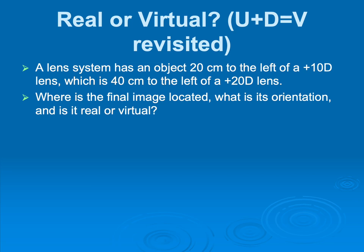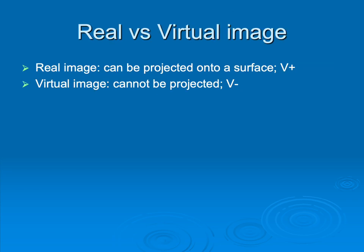Okay, moving on. We now have a question that says there's a lens system that has an object 20 centimeters to the left of a plus 10 lens, which is 40 centimeters to the left. Wait, wait, hold up. We have two lenses in our system now? How in the world do we do that? It wants to know where the final image is located, orientation. How do we know real versus virtual? Well, the classic teaching is a real image can be projected onto a surface like a movie screen and a virtual image can't. And that's never really helped me. Maybe it helps you, but the thing that I understand is that a real image, v in u plus d equal v, is going to be positive. And if it's negative, that's a virtual image. So I do understand plus and minus v.